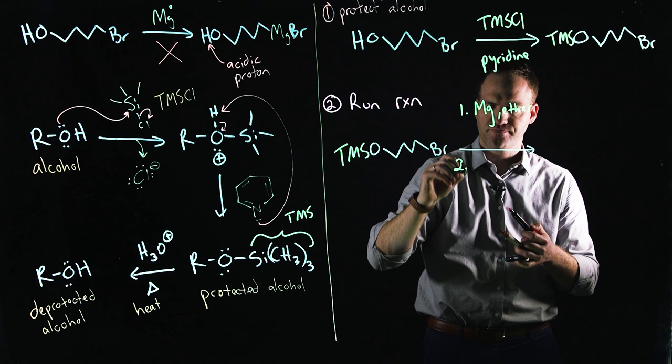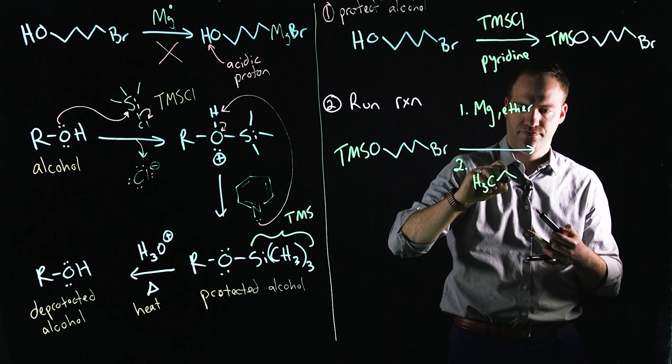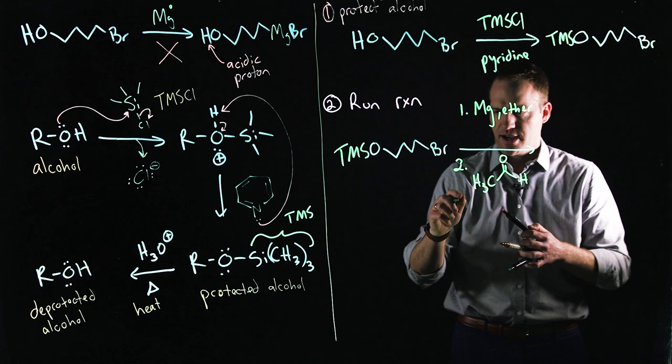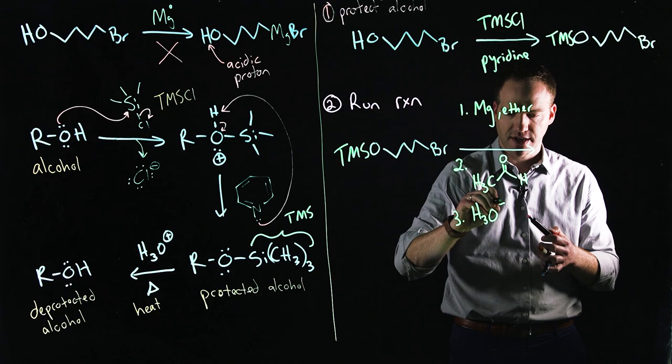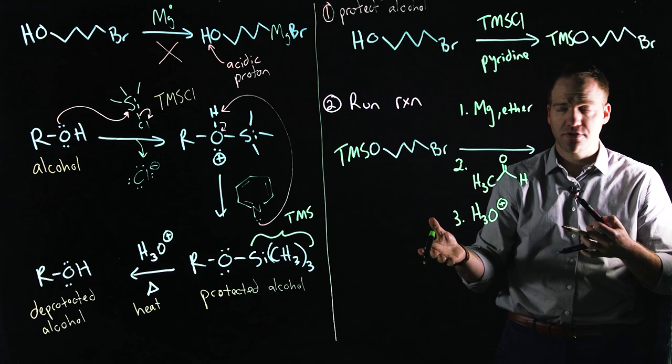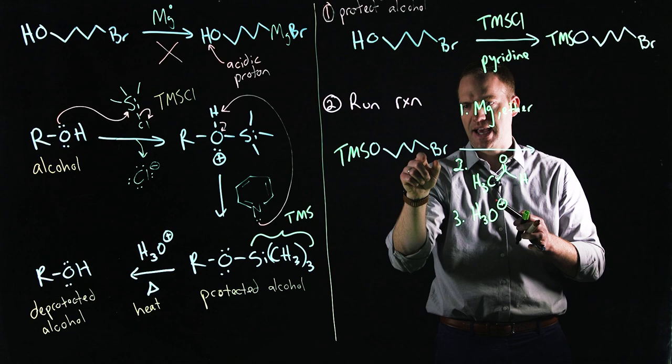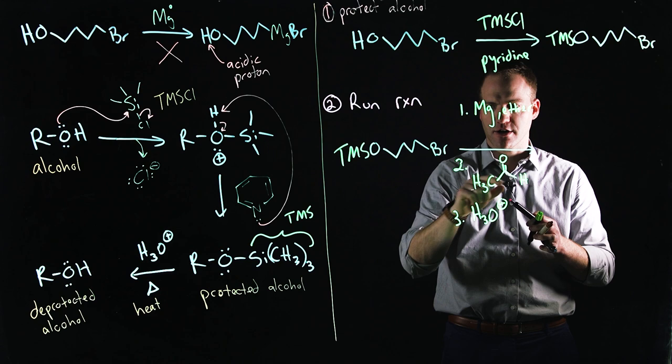Step two. I can give the Grignard reagent something to attack. So I'll use this very simple aldehyde. And then in every Grignard reagent, we have to end this with H3O+. Now I'm going to show this in a second and a third overall step. But this H3O+ could be used in the same way that I used H3O+ here to deprotect. So what will happen is the magnesium is going to add into this bond to make the Grignard reagent.